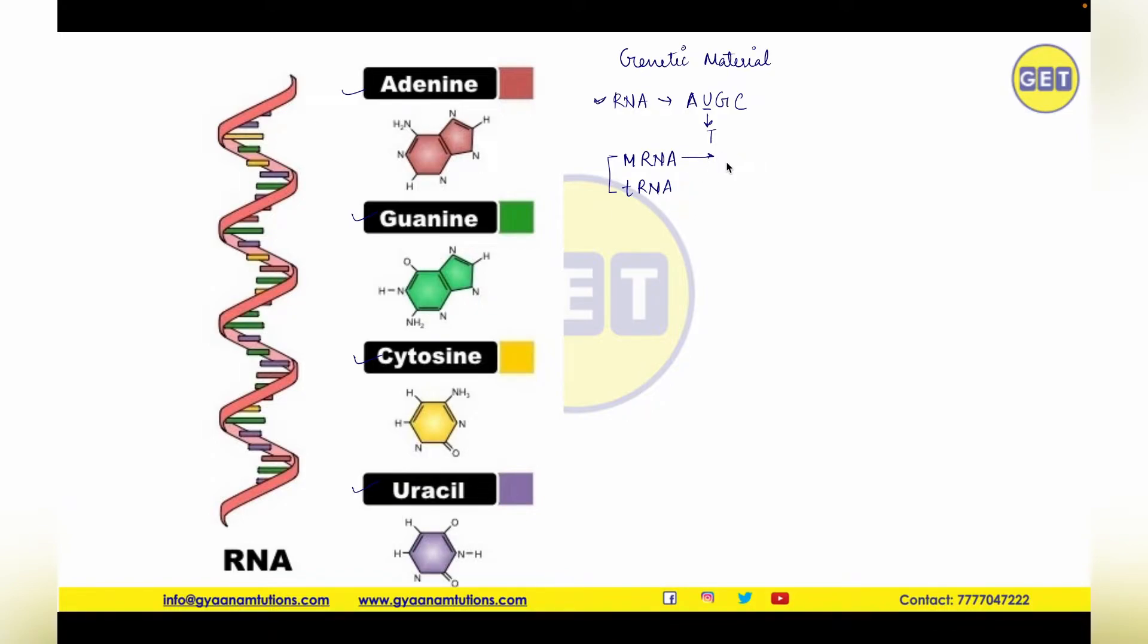Messenger RNA is going to bring the message that is coded by the DNA, and transfer RNA is going to bring the amino acid which is going to make up the protein. So you have guessed it correct - codons and anticodons are very important structures for protein synthesis.